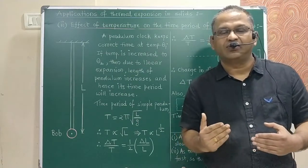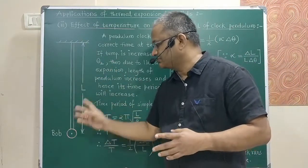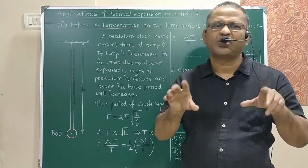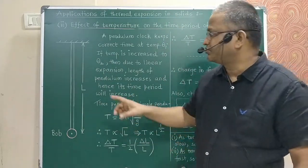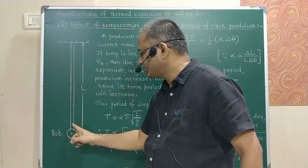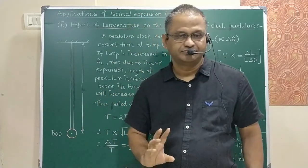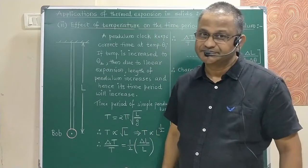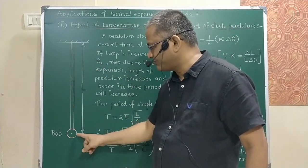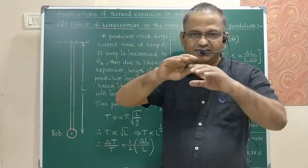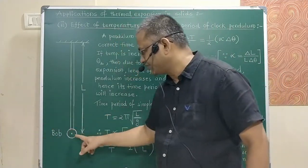Inside the clock there is a pendulum, which consists of a metal rod with a small metal sphere, called a bob, attached at the lower end. This rod is fixed with a support, and the bob is allowed to oscillate.